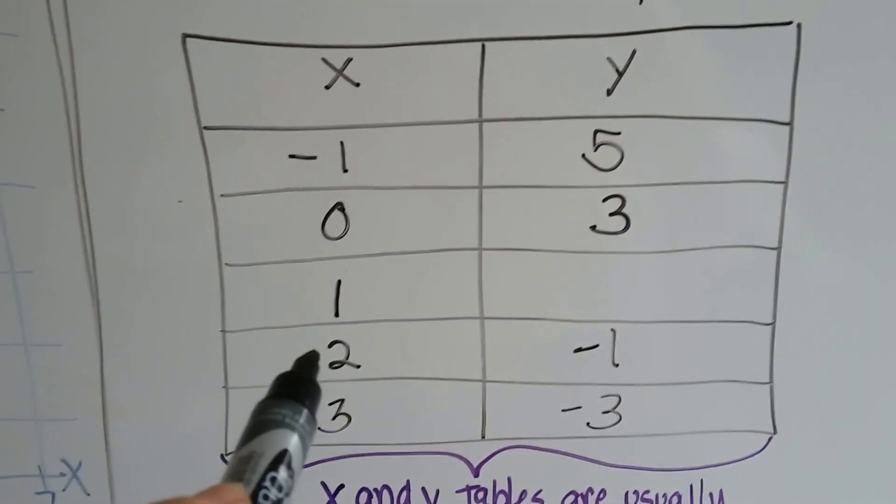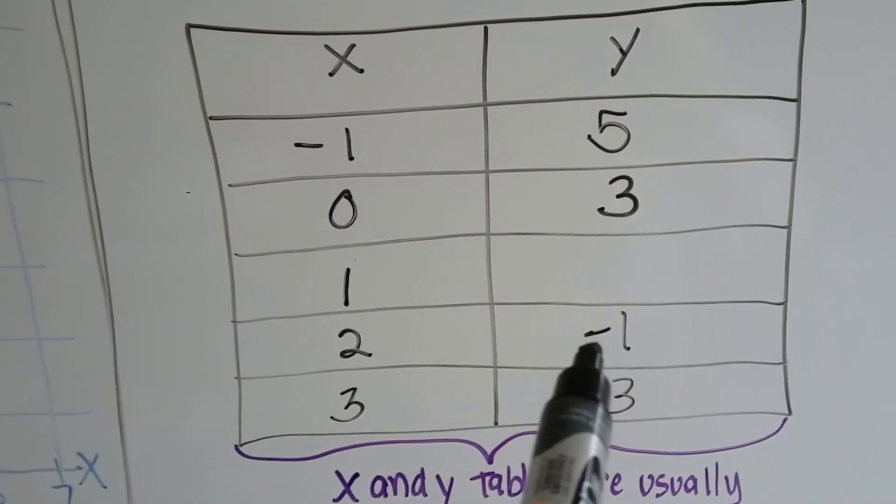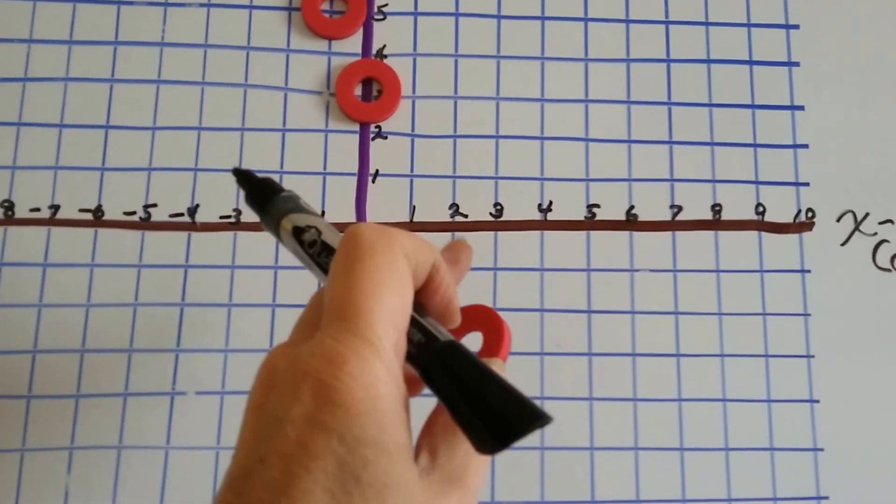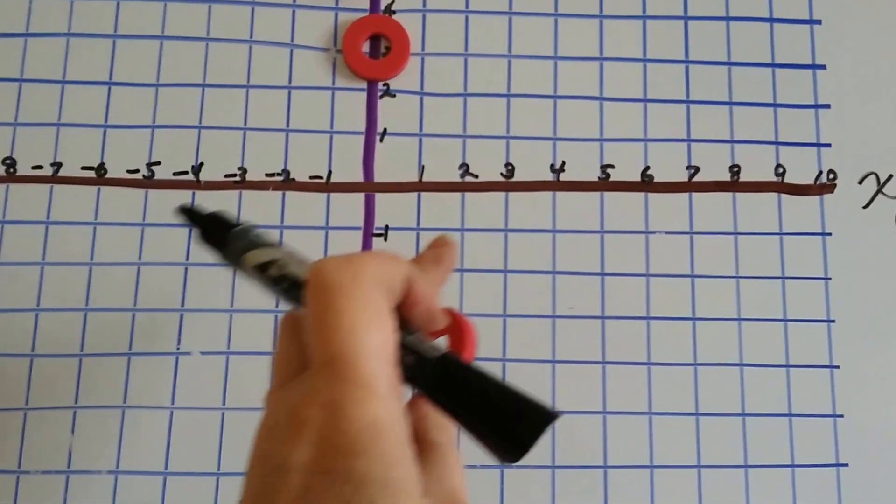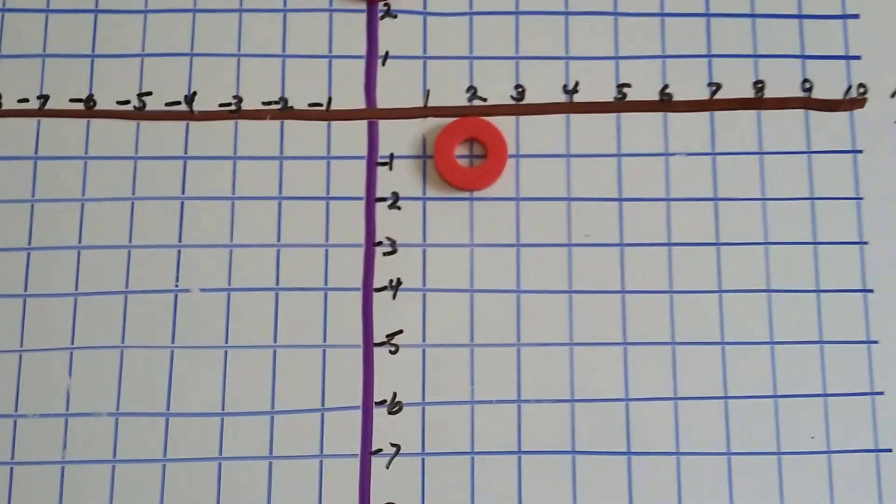Now we've got one that's missing, so we're going to skip it and go to 2 on the x and negative 1 on the y. 2 on the x is right here, and negative 1 for y is right here.